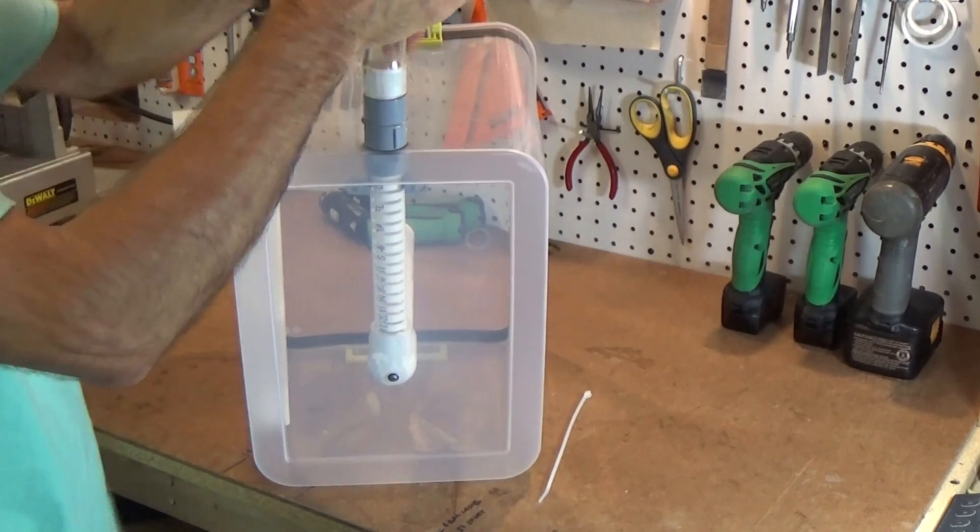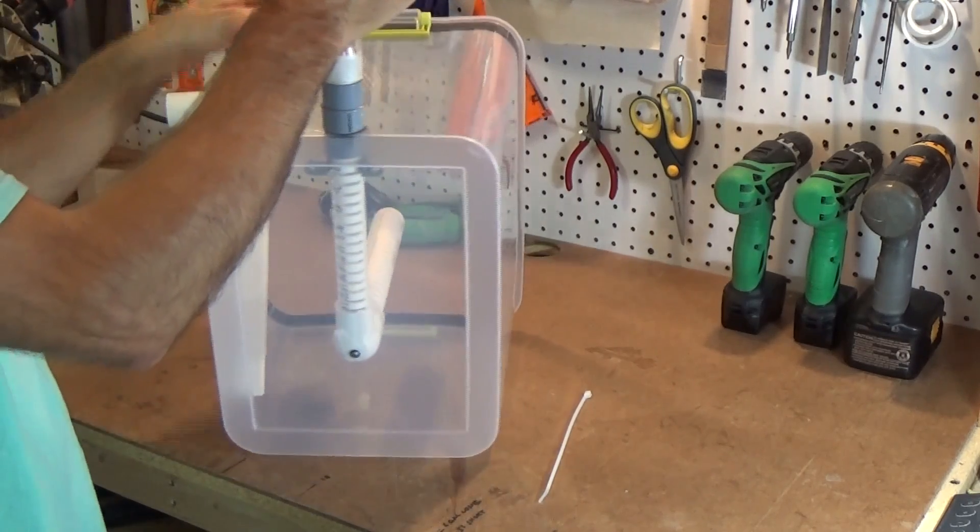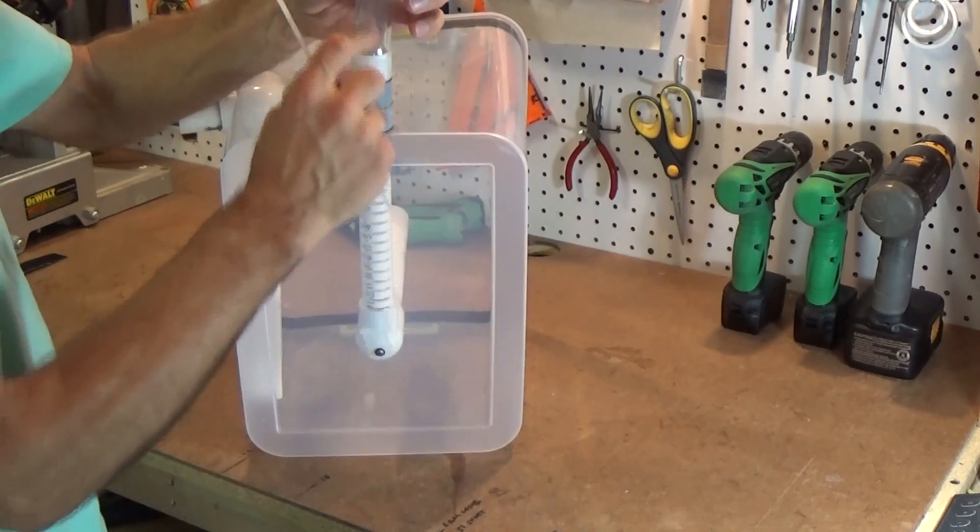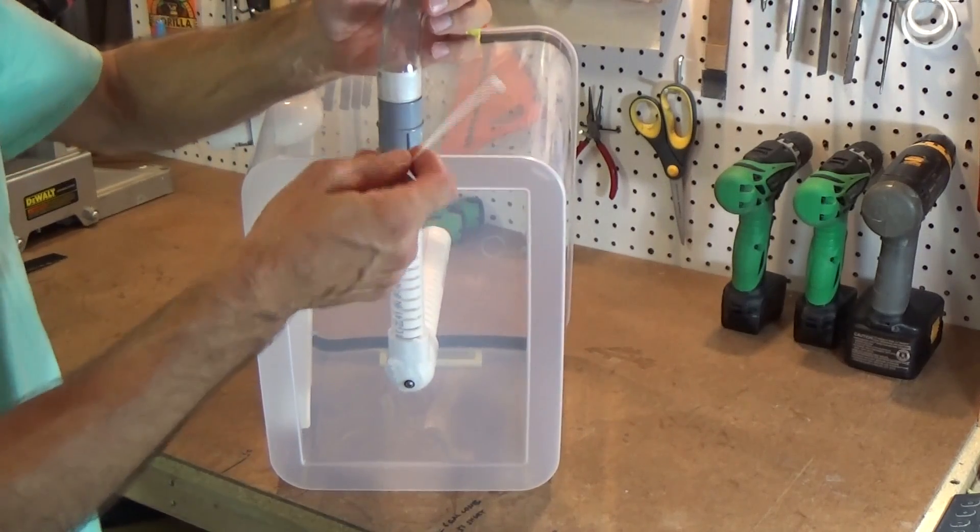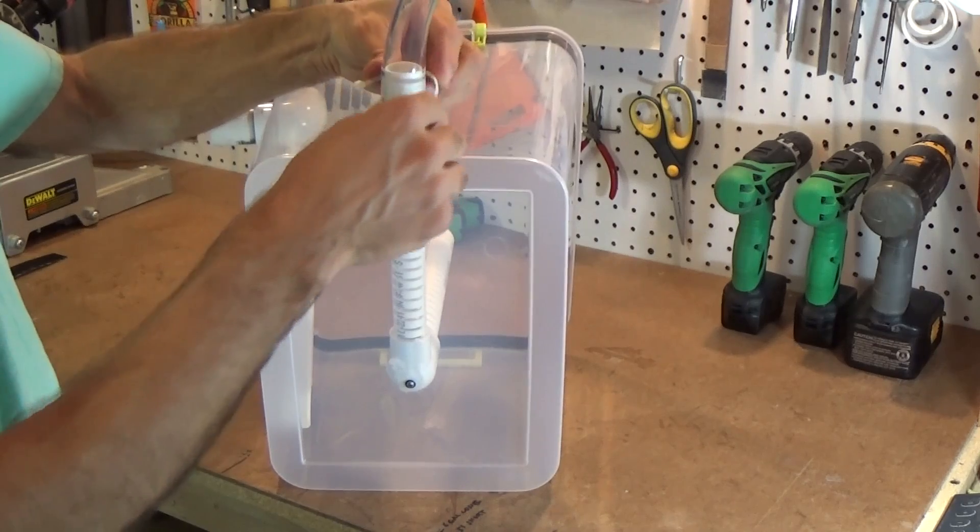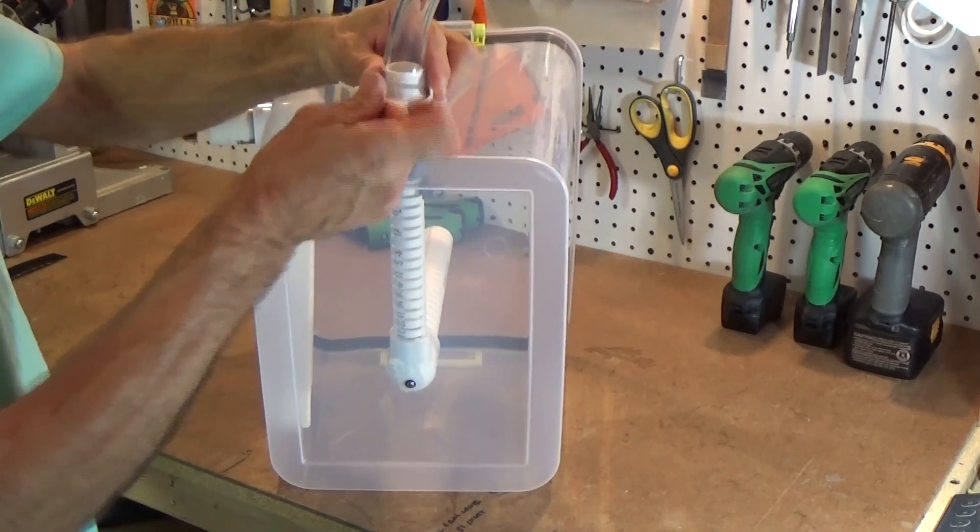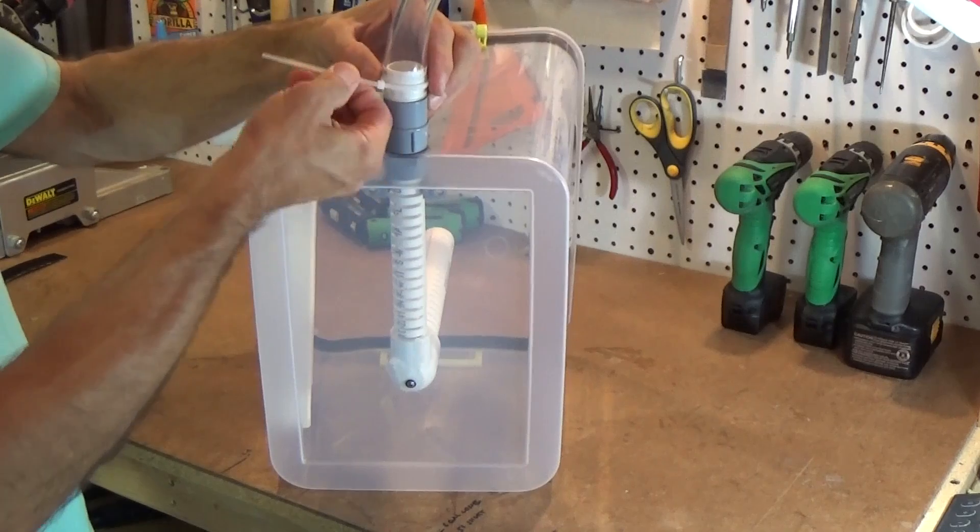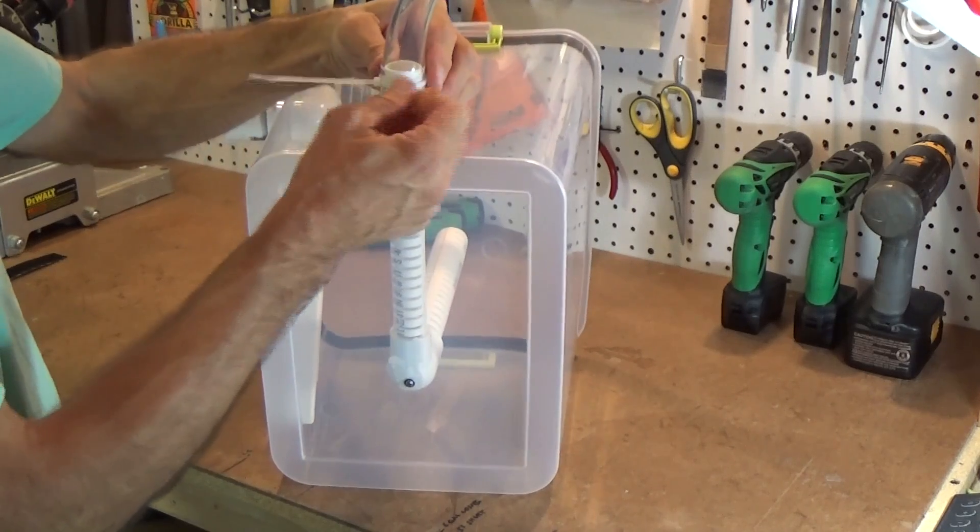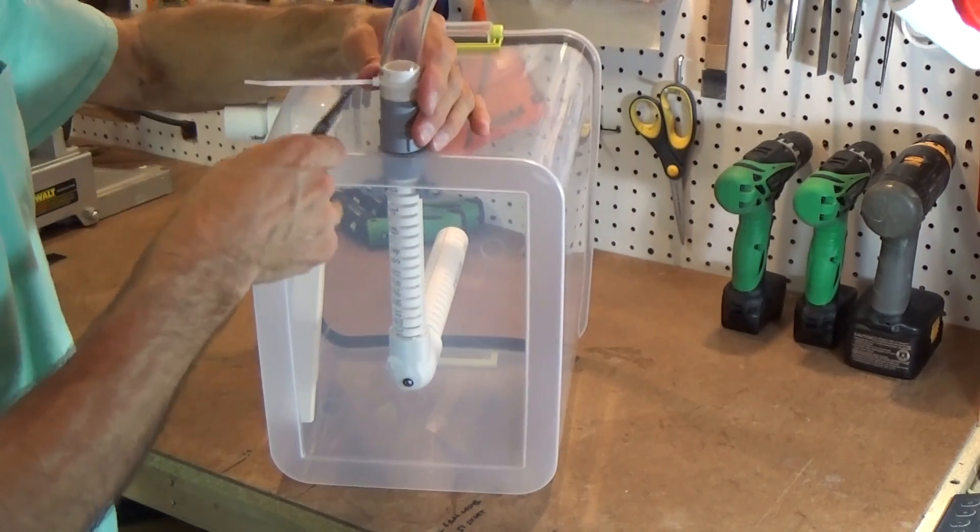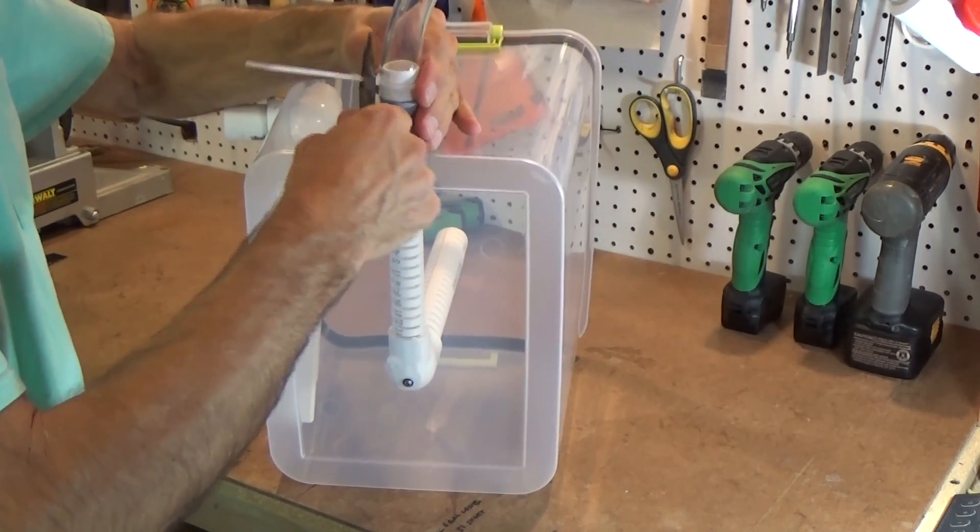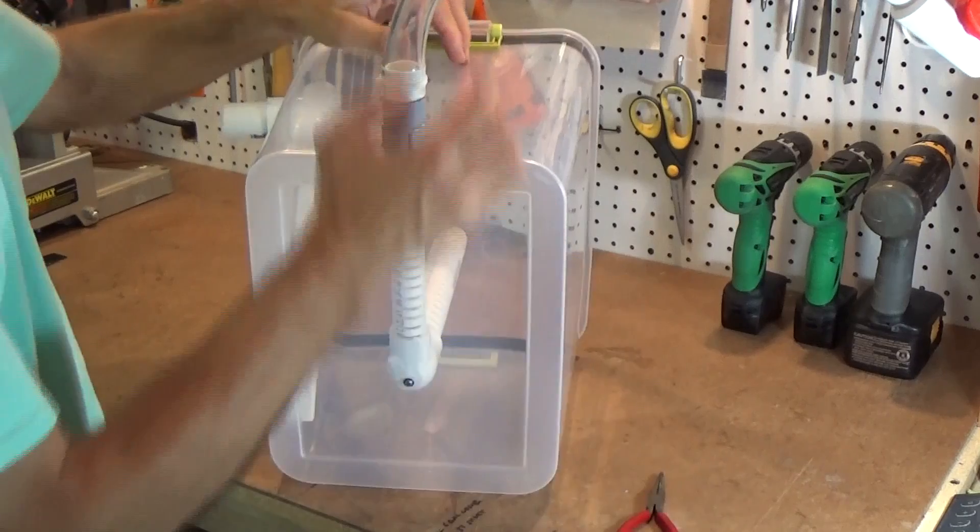Now if your tube happens to be a little bit tighter than this, you can take and dunk this end for a minute or two in some hot water, like the temperature of some hot coffee or tea. Once you get it in place, just put the cable tie around, roughly around the center of that fitting there and kind of pull it tight, cut off the excess and you're ready to go.